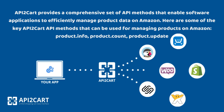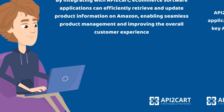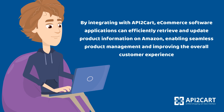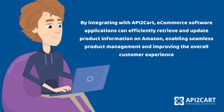Here are some of the key API2Cart API methods that can be used for managing products on Amazon: product info, product count, and product update. By integrating with API2Cart, e-commerce software applications can efficiently retrieve and update product information on Amazon, enabling seamless product management and improving the overall customer experience.